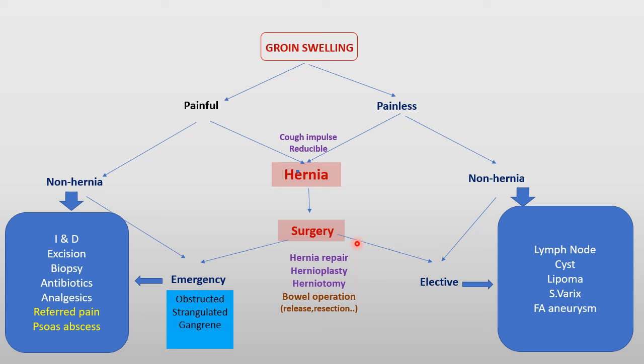Elective operation is for patients with no complications of the hernia. How do you diagnose hernia? Clinically, cough impulse and reducibility are very reliable findings, but in patients with complications like strangulation, cough impulse may be negative and the lump may not be reducible. Once hernia is diagnosed, you classify as emergency or elective. The various operations include hernia repair, hernioplasty, herniotomy, and operations on the bowel such as release of adhesions or resection in cases of strangulated or complicated hernias.